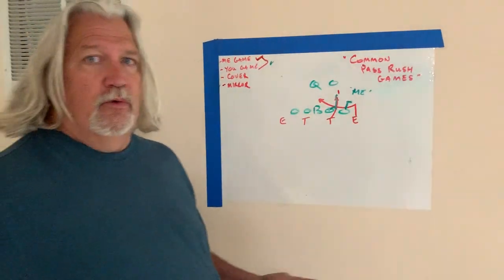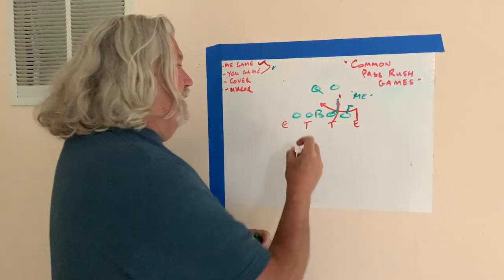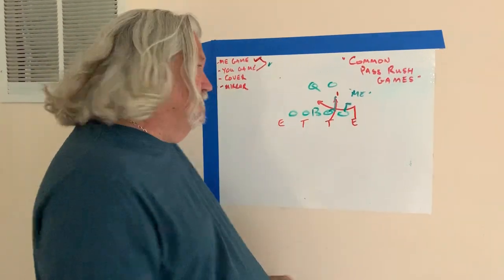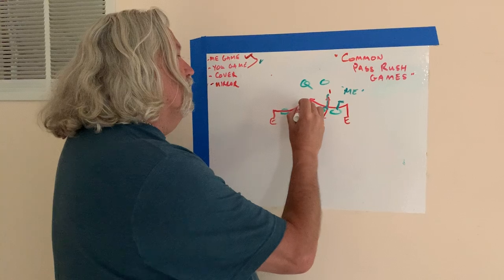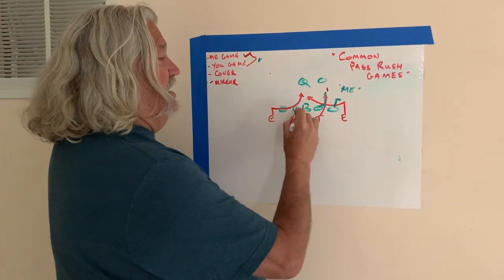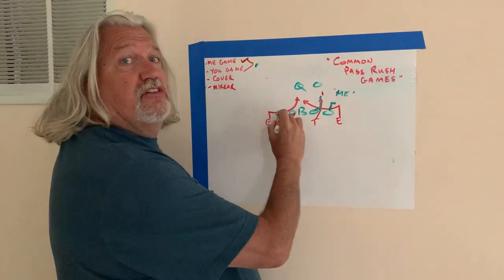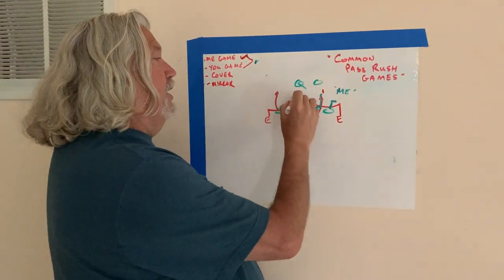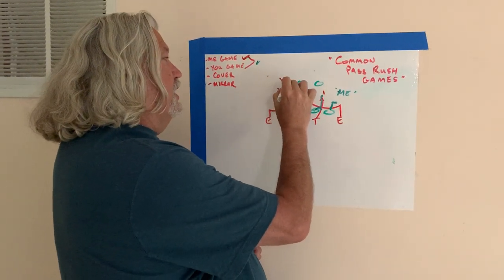A you game, well, that's the opposite. Now it's you go first to the end. He goes up and under. Now the tackle flashes and once he sees color pass him, the tackle will come around. That's a you game.